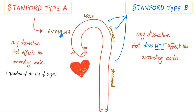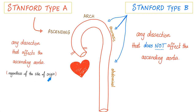If it involves the ascending aorta, we call this dissection Stanford type A. Why? Because this area can compromise the coronary artery. However, if it happened in the arch or the descending, we call it Stanford type B. Type A means any dissection that affects the ascending aorta — whether it affects only the ascending, ascending and arch, or ascending, arch, and descending, we don't care. If it affects the ascending, it's type A. If it does not affect the ascending, it's type B. That's it — regardless of the site of origin.